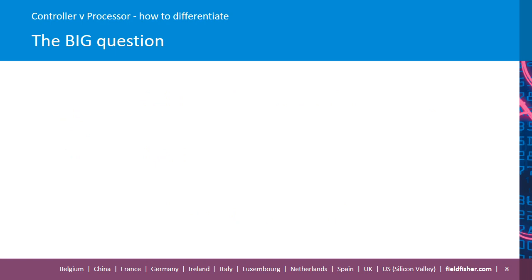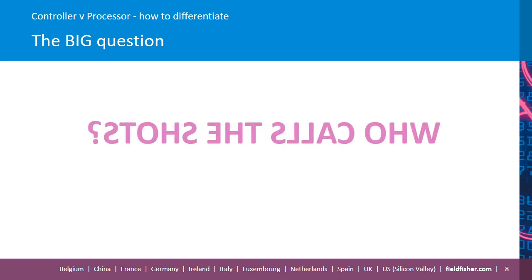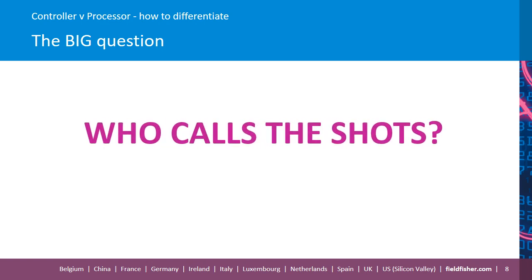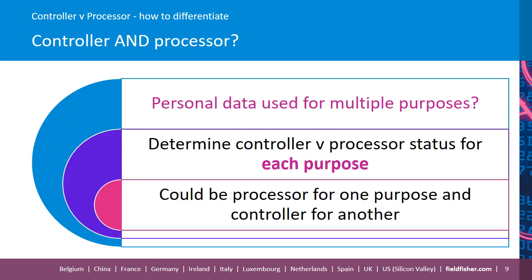If we roll that all into one, the really big question is: who calls the shots? What actually happens in reality quite often is that personal data is used for multiple purposes, in which case you'd need to take a look at each purpose and determine who's the controller and who's the processor for each of those purposes. You could find that an entity is a processor for one purpose but a controller for another purpose.